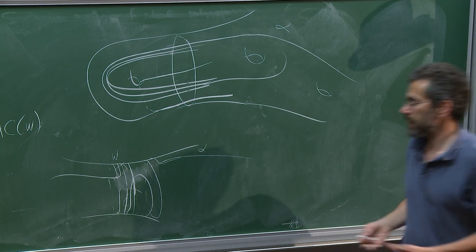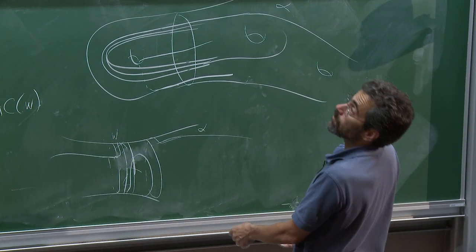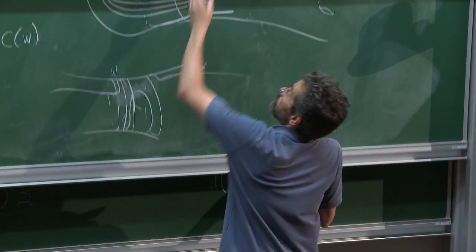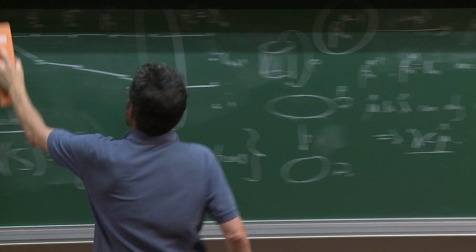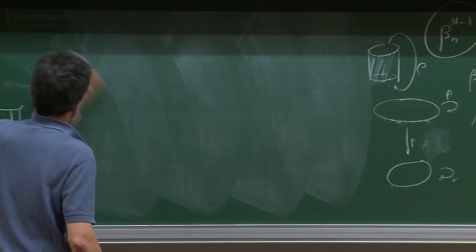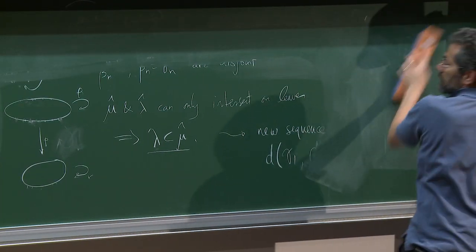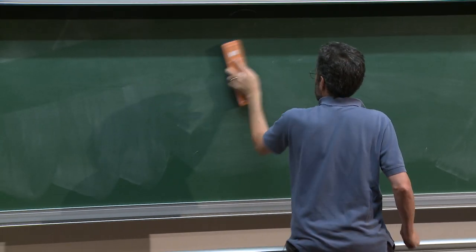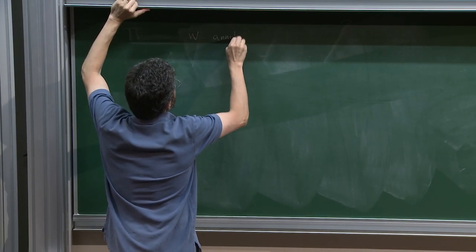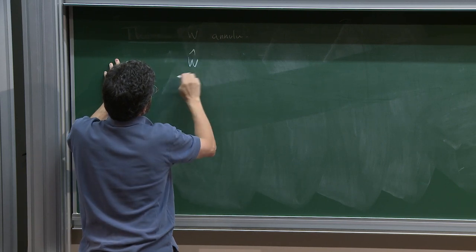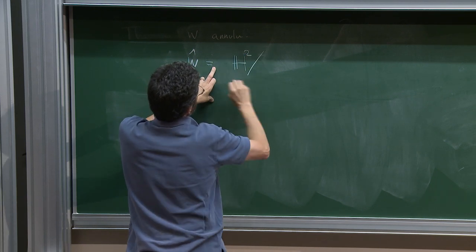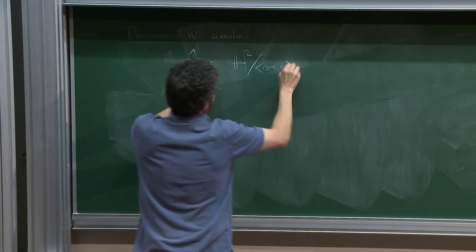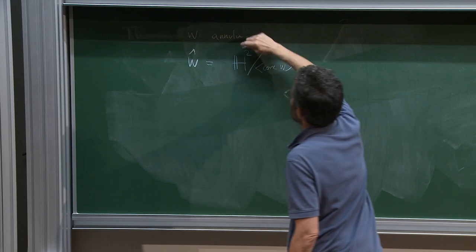The way to get a well-defined thing is to go to the universal cover — or actually to the annular cover. Now suppose that W is an annulus. There's a kind of canonical annular cover: this is H² — the universal cover of S — modulo the group generated by the core of W.